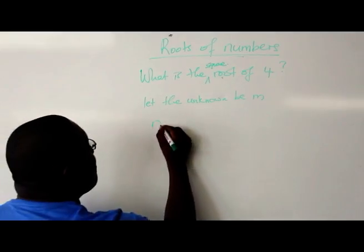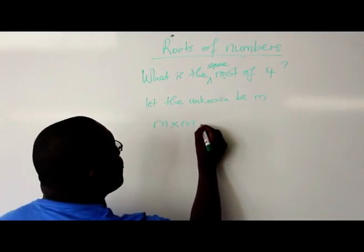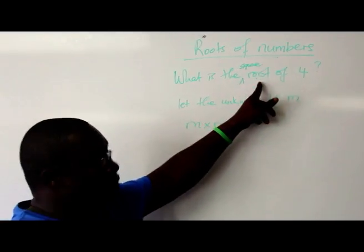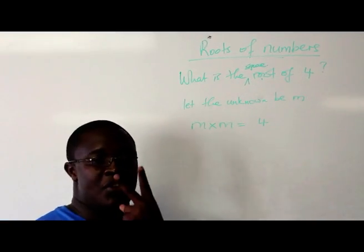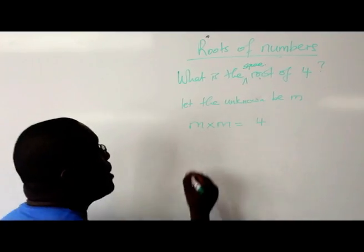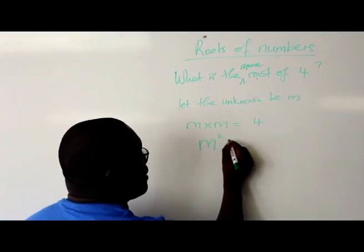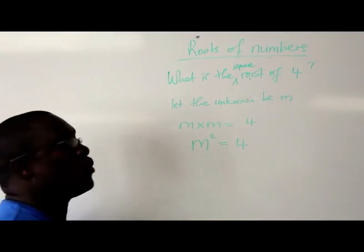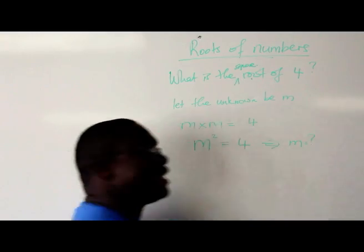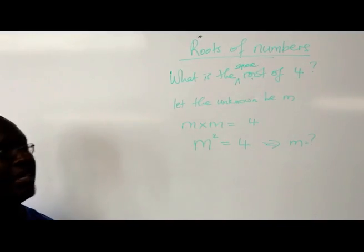Square root means that it multiplies itself two times. In other words, we're saying m squared is equal to 4. So what is m?